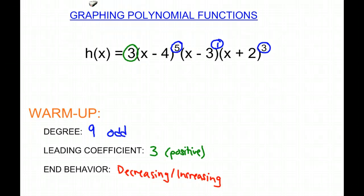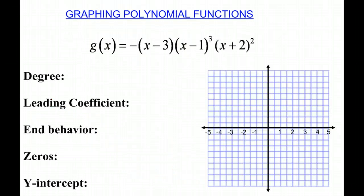And now we're ready to actually go ahead and graph a function. So here we have g of x is equal to negative quantity x minus 3 times the quantity x minus 1 cubed times the quantity x plus 2 squared.